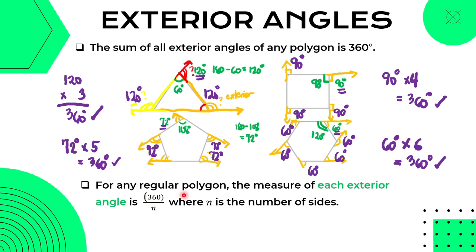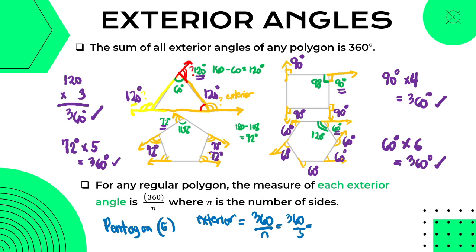For any regular polygon, the measure of each exterior angle is equal to 360 over n, where n is the number of sides. For example, a pentagon with 5 sides: 360 divided by 5 equals 72 degrees for each exterior angle. Para mahanap naman ang interior angle, we simply subtract from 180 degrees — since interior and exterior are supplementary: 180 minus 72 equals 108 degrees for the interior angle.